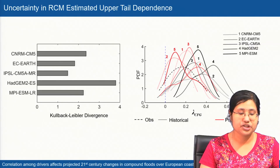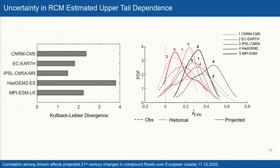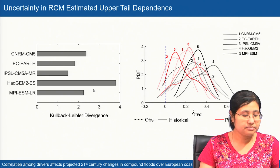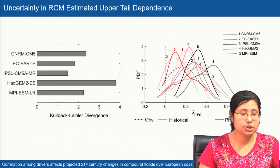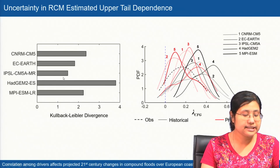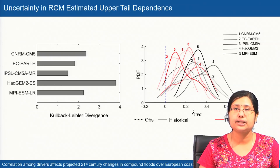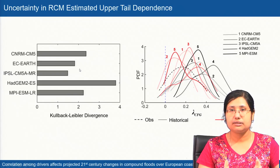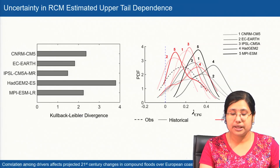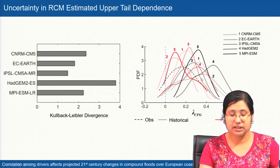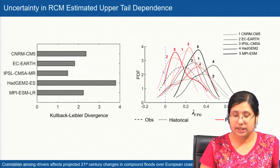Regarding uncertainty across RCMs in the estimated upper tail dependence, the uncertainty among regional climate models is quantified using the KL divergence measure. The KL distance is very large for HadGEM2, but the IPSL model shows a reasonable distance with respect to observation. Note that the KL divergence measure gives a probabilistic — not direct distance — indication of model performance relative to observation. From the density diagram, all models show an increase in dependence strength relative to observation in the historical period, but in the projection period the dependence strength gradually decreases.